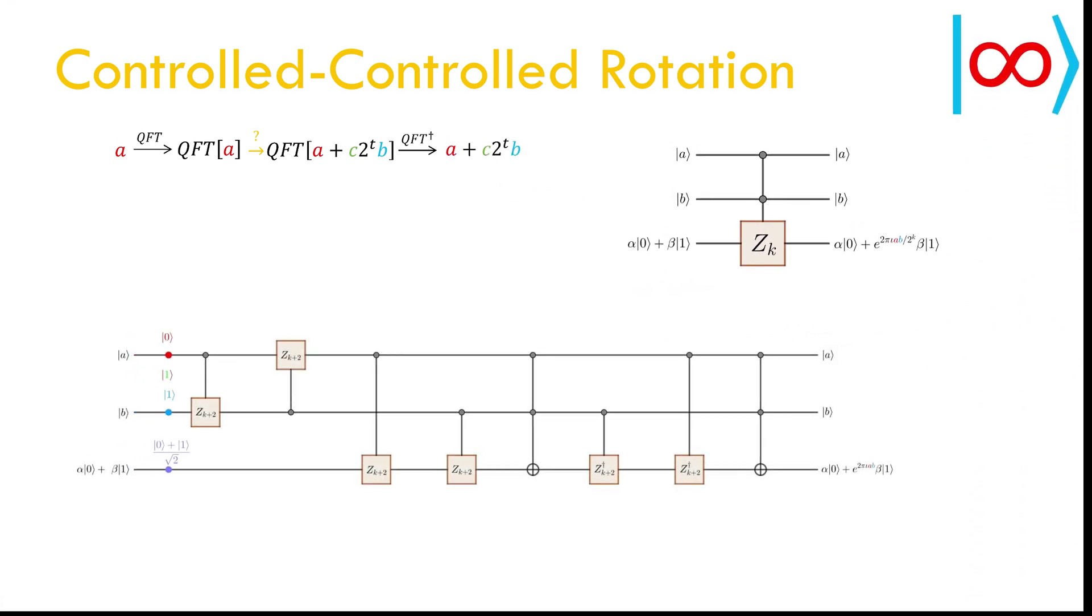The paper I referred for the algorithm for quantum multiplication does not provide any decomposition of the doubly controlled rotation. The previous decomposition is simple, but it uses an extra qubit. The following circuit I built does not require any additional qubit, but it requires ability to rotate by one fourth of the required angle.